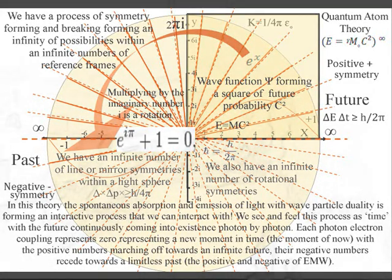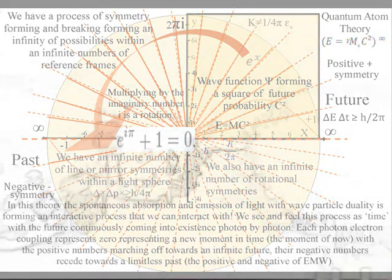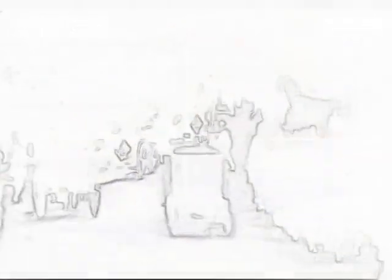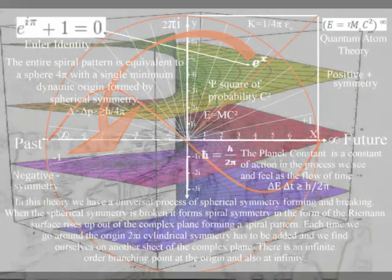Each photon-electron coupling represents zero, representing a new moment in time, the moment of now, with the positive numbers marching off towards an infinite future and the negative numbers receding towards a limitless past, the positive and negative of electromagnetic waves.